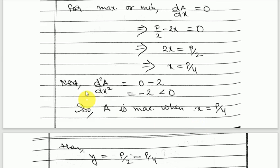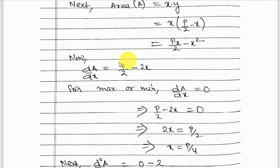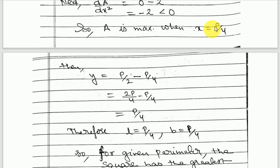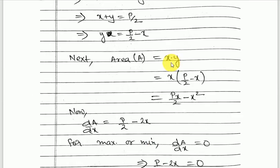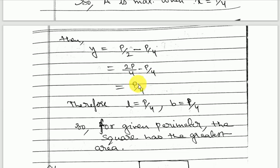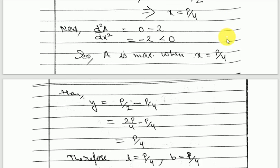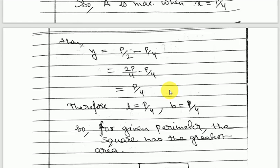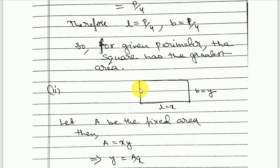The second derivative is −2, which is less than zero, so the area A is maximum when x = P/4. Then y = P/2 − P/4 = P/4. Since x = y = P/4, length equals breadth, which means the rectangle is a square. Therefore, for a given perimeter, the square has the greatest area.